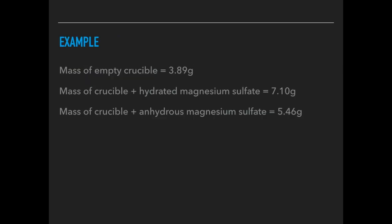Here's an example for you to try. You've got these three values: Mass of empty crucible, 3.89 grams. Crucible and hydrated magnesium sulphate was 7.10. And the crucible and anhydrous at the end was 5.46 grams. From those results, you need to calculate a value for the hydrated salt. If you want to have a go at that, pause the video and we'll look at the answer.